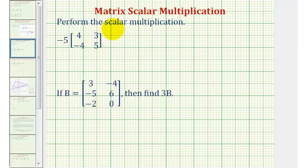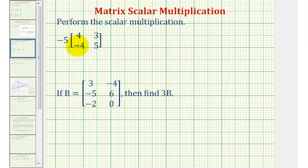We want to perform matrix scalar multiplication. Matrix scalar multiplication is very similar to distribution. Looking at our first example, we have negative five times the given two by two matrix, which means we're going to multiply each element in the two by two matrix by negative five.